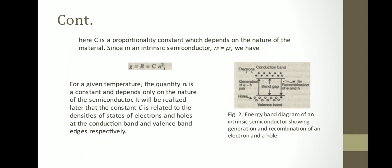The energy band diagram of an intrinsic semiconductor shows the generation and recombination of electrons and holes. We can see that an electron from the valence band jumps into the conduction band with the increase of temperature, and holes are created in the valence band. There are holes in the valence band and electrons in the conduction band.